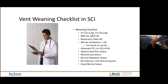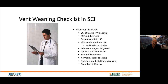The weaning checklist: maximal inspiratory pressure should be greater than 20, as should maximal expiratory pressure. Respiratory rate should be less than 30, and minute ventilation should be less than 10 liters but ideally doubled voluntarily. We need to optimize nutritional status, minimize secretions, make sure they don't have infections, ensure good mental status — and make sure they are willing to wean off the ventilator.